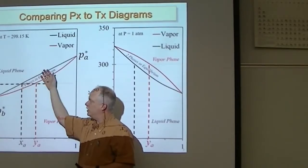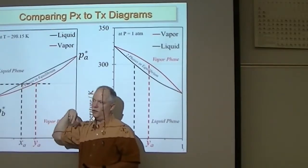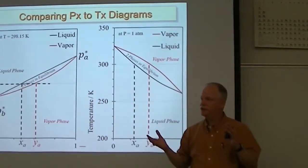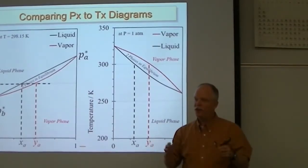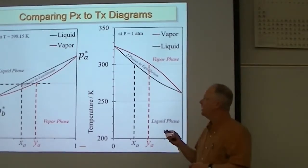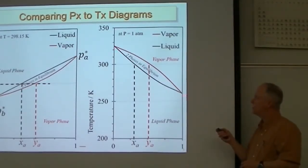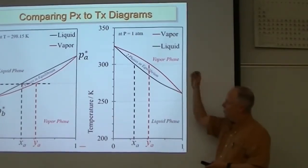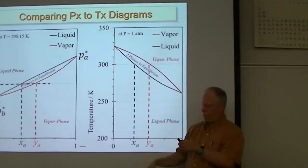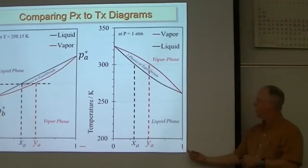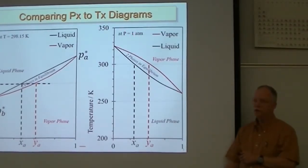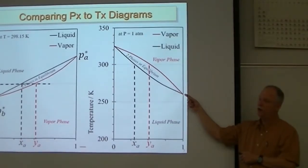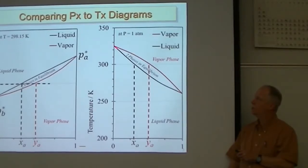So we can change the temperature and watch where the compositions pass one atmosphere, and we can map out a whole different phase diagram that is at one atmosphere pressure and covers a range of temperatures. This is a temperature-composition phase diagram. Over here on the left side is pure B and that's the boiling point of pure B. Over here on the right is pure A and that's the boiling point of pure A.